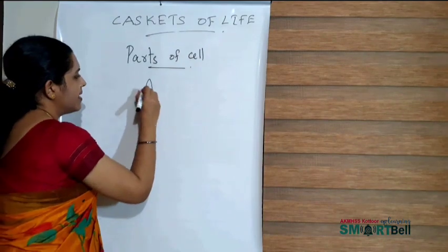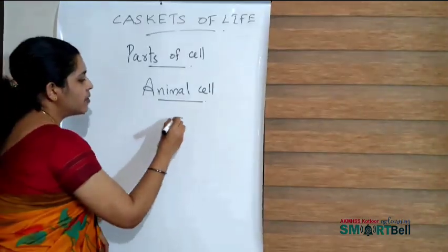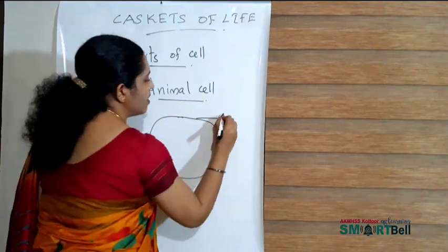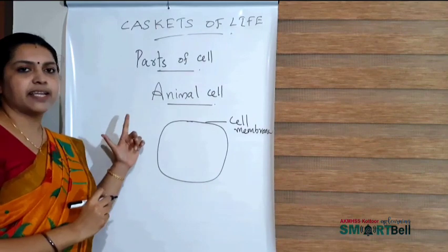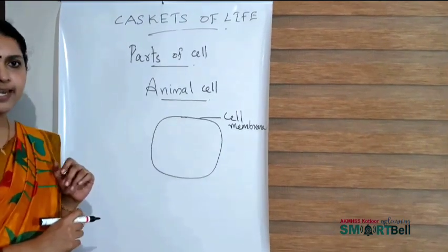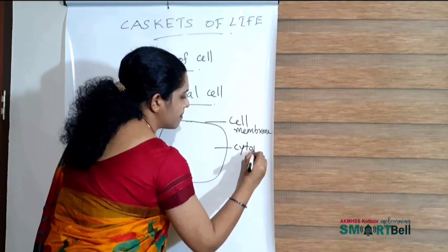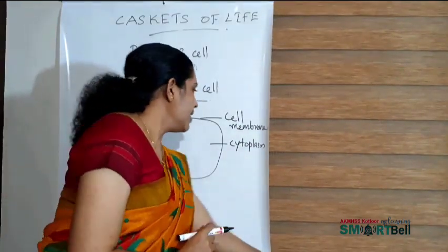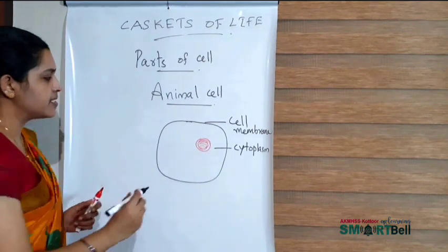Now let us discuss the parts of the cell. First, I am considering an animal cell. The animal cell is surrounded by a membrane — the outer covering is called the cell membrane. Inside the cell membrane there is a jelly-like material called cytoplasm. At the center of the cell there is a part called the nucleus.